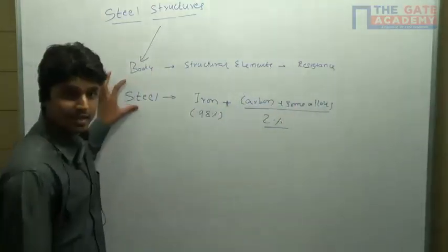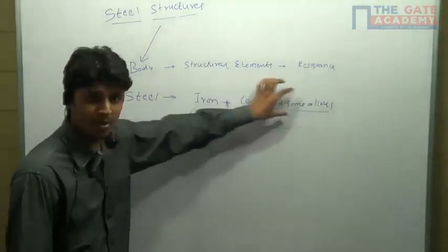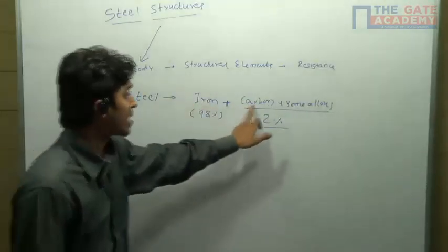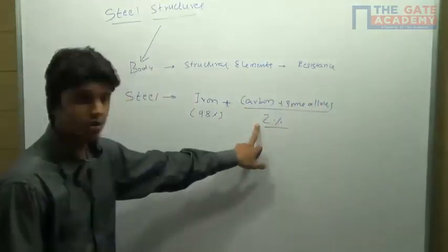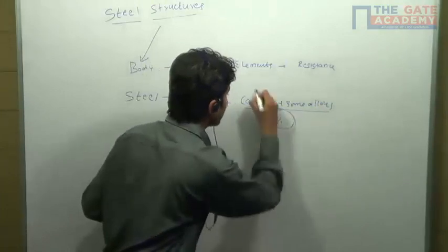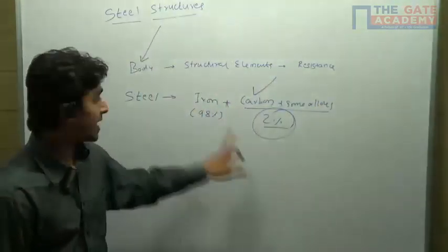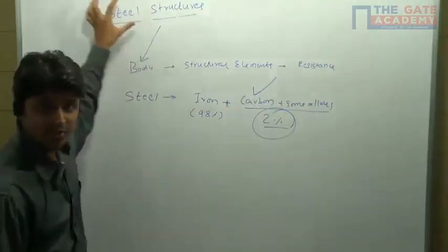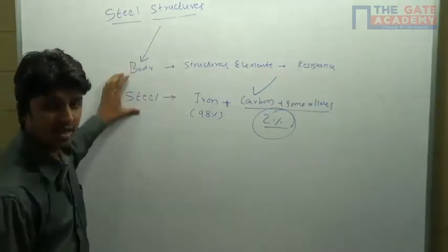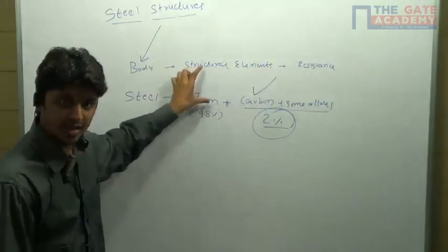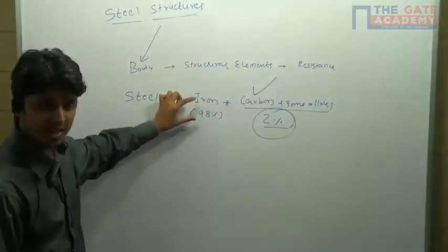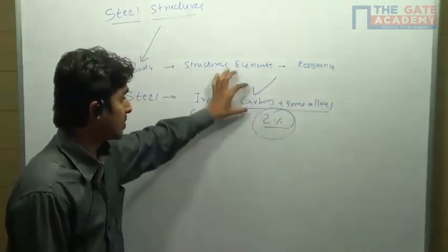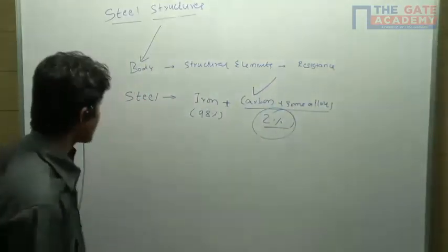The steel consists of iron plus carbon plus some alloys. Majority of the steel consists of iron which constitutes about 98 percent. Carbon plus some alloys together will constitute two percent. Again, in this two percent, the majority is carbon. So the structures which are made up from the steel are called as steel structures.